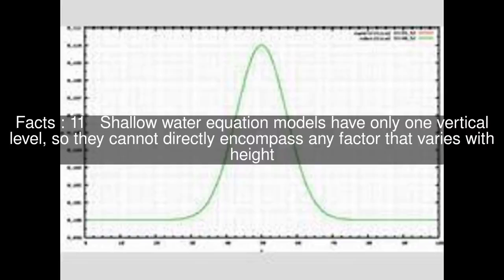Shallow water equation models have only one vertical level, so they cannot directly encompass any factor that varies with height. However, in cases where the mean state is sufficiently simple, the vertical variations can be separated from the horizontal and several sets of shallow water equations can describe the state.